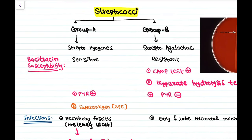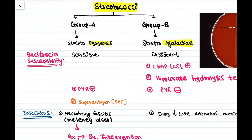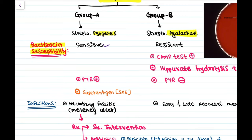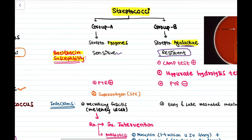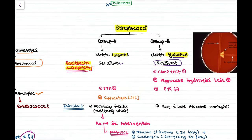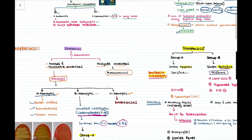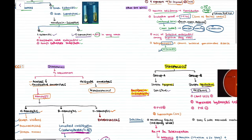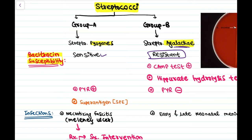Group A and Group B Streptococci are differentiated based on bacitracin susceptibility. Group A (Streptococcus pyogenes) is bacitracin sensitive, while Group B (Streptococcus agalactiae) is bacitracin resistant. This is analogous to the novobiocin sensitivity test used for Staphylococci.